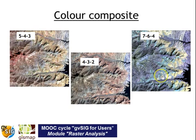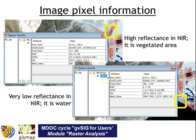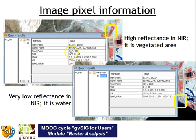You can see other examples of the same bands with different color composites — notice how white is more enhanced in some combinations. You can check pixel information through the image analysis tool or by clicking directly. For example, in a vegetated area the red channel value may be 181 because vegetation has high reflectance in the near infrared, while water has a very low value in the near infrared.